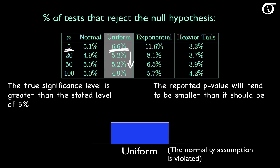Even for a sample size as small as 5, the proportion of rejections is fairly close to the stated significance level of 5%. The uniform distribution is perfectly symmetric and doesn't produce extreme values. Skewness and outliers can cause the t-procedures to perform very poorly, but we don't see either in the uniform distribution, so the t-procedure tends to work quite well here even for smallish sample sizes.